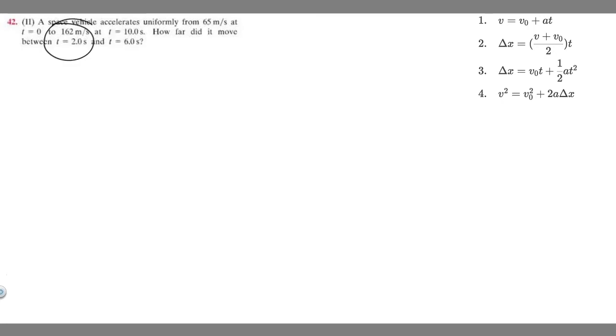Let's write down what we're given. The space vehicle's initial velocity v sub 0 is 65 meters per second at t equals 0, and its final velocity is 162 meters per second at 10 seconds. So the amount of time in between these two is going to be 10 seconds.